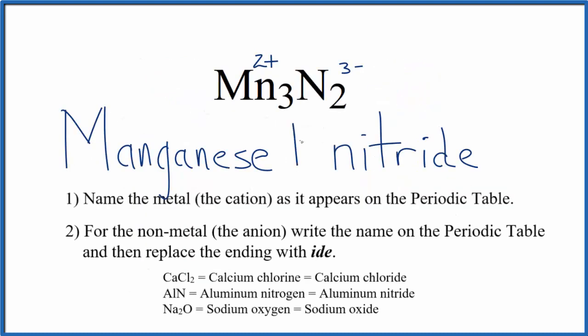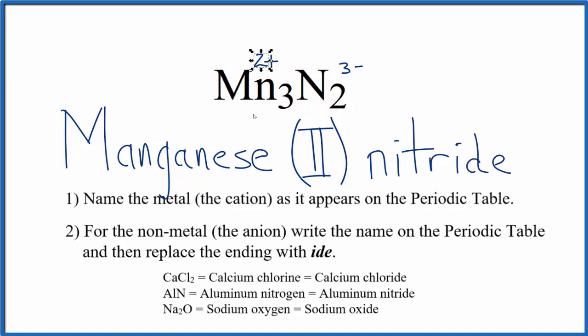We write our Roman numeral 2, and we put this in parentheses. And this is the formula for Mn₃N₂, manganese 2 nitride. And the 2, that comes from this 2 up here on the manganese.